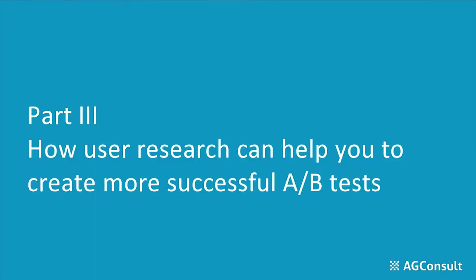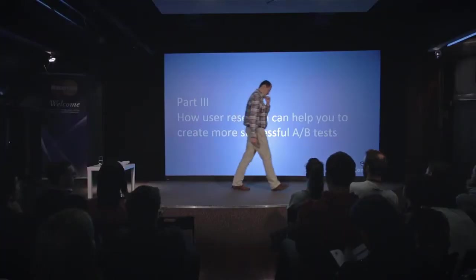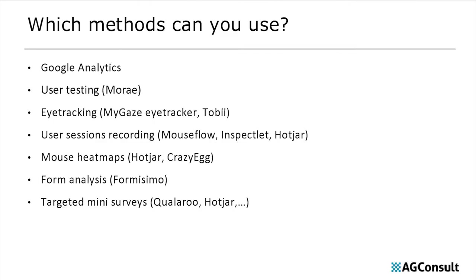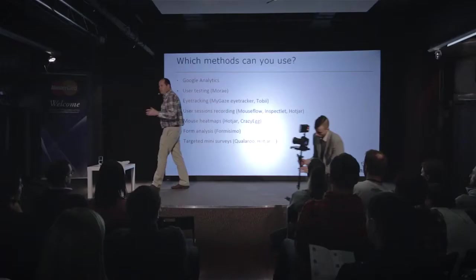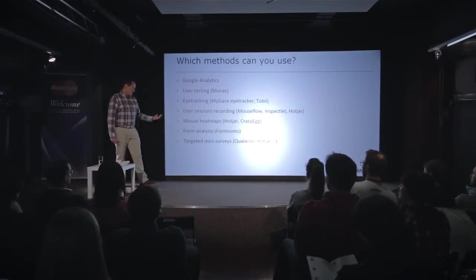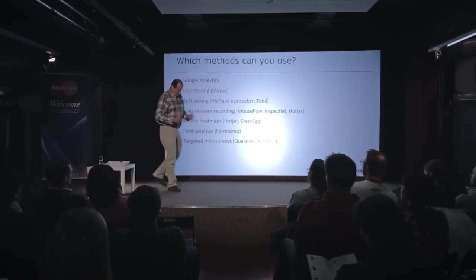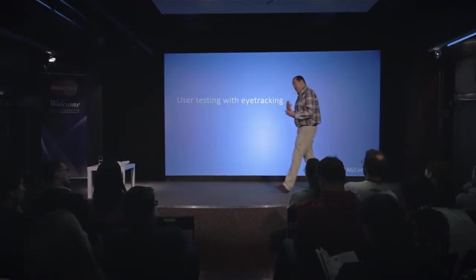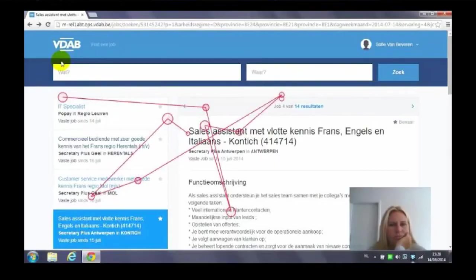Use research tools to make your A/B tests better. You can use Google Analytics, user testing with or without eye tracking. I really love user session recording software, mouse heat map generating software like Mouseflow and Inspectlet, I love Hotjar, and form analysis tools. You can do targeted mini-surveys, and all those things will help you see how users interact with your web page and give you great ideas.